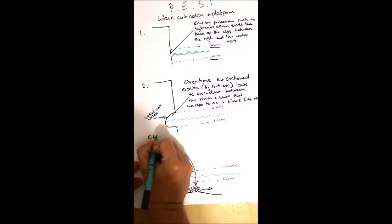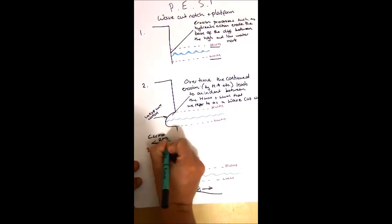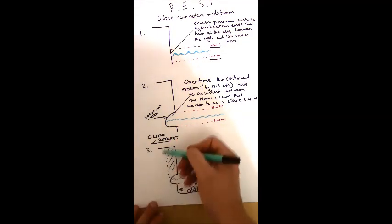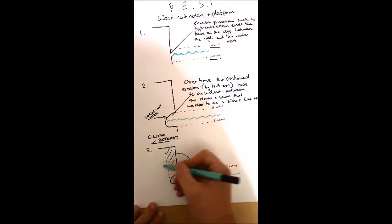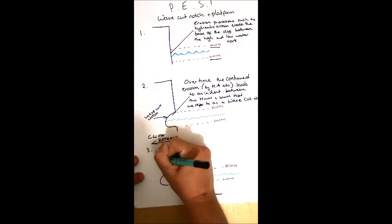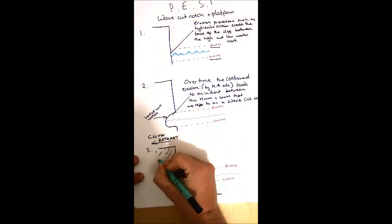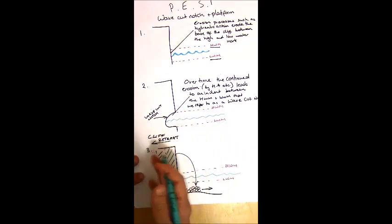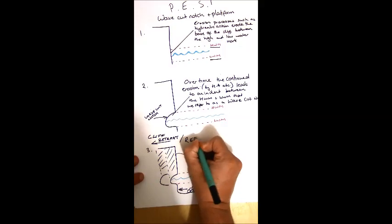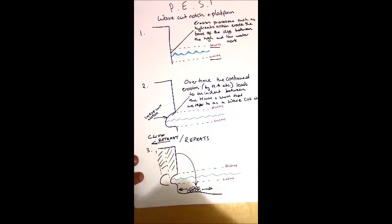This leads to the process of cliff retreat. In certain places along the Dorset coastline — our case study — this is occurring at a rapid rate of around two metres per year at Barton-on-Sea. The cliff position then realigns itself, a new notch is created, the cliff above becomes unsupported and collapses again, and this cycle repeats itself.